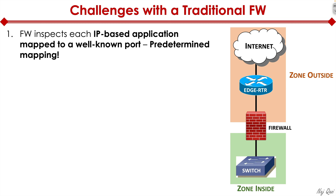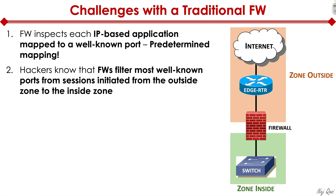For example, a web server is an application running on a server with an IP address. There's also a port: if it's providing services over HTTP, that's port 80, or HTTPS over port 443. It's all predetermined mapping.